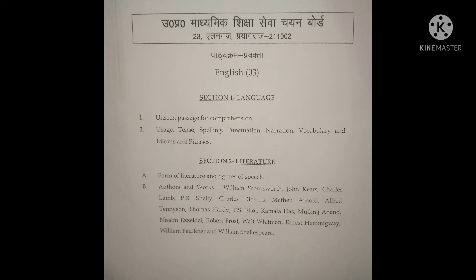The syllabus for UPPGT English examination is divided into two sections: Section 1 which is English language, and Section 2 which is English literature. The first section contains unseen passage for comprehension. Apart from that: usage, tense, spelling, punctuation, narration, vocabulary, and phrases and idioms.